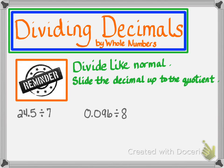Now we're moving on to dividing decimals by whole numbers. When you're dividing decimals by whole numbers, you just simply divide like you normally would. At the end, you need to make sure that you slide that decimal up that's in the dividend all the way up to your quotient box. Go ahead and pause your video and complete these two problems.